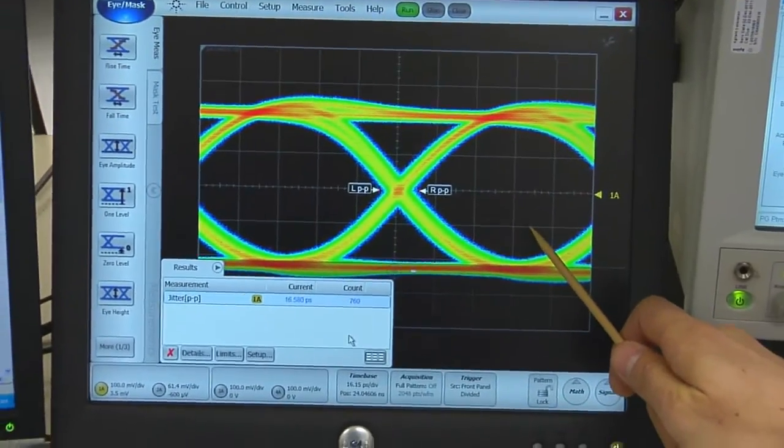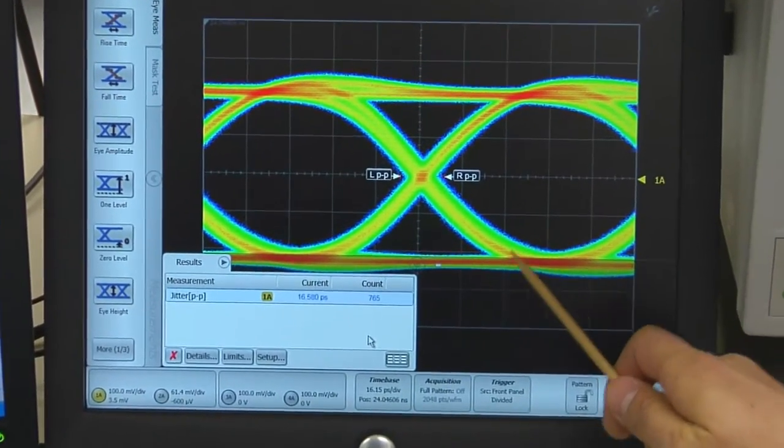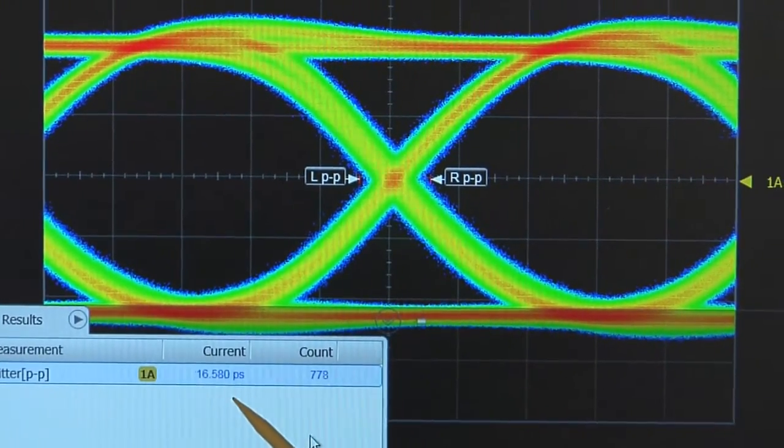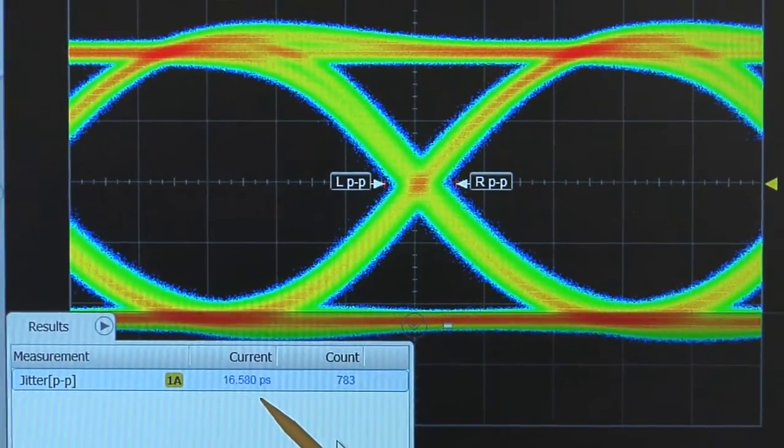The total jitter here is 16.58 picoseconds for PRBS31 data type running at 10.3 gigabits per second.